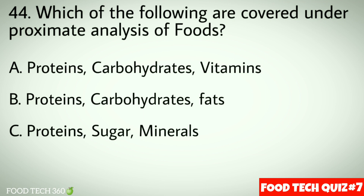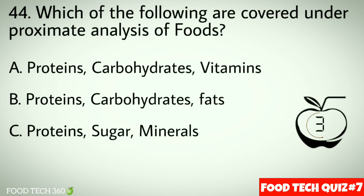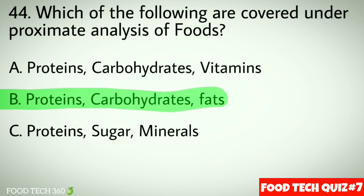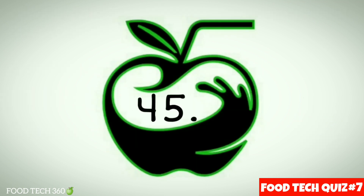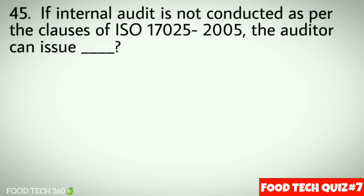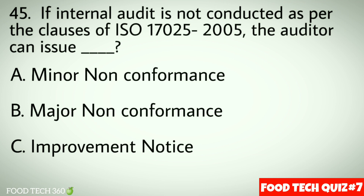Question number 44: Which of the following are covered under proximate analysis of foods? Options: a) Proteins, carbohydrates, vitamins, b) Proteins, carbohydrates, fats, c) Proteins, sugar, minerals. Correct answer: b) Proteins, carbohydrates, fats. Question number 45: If an internal audit is not conducted as per the clause of ISO 17025:2005, the auditor can issue — options: a) Minor nonconformance, b) Major nonconformance, c) Improvement notice. Correct answer: b) Major nonconformance.